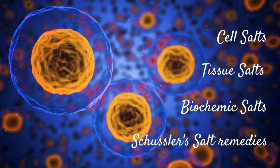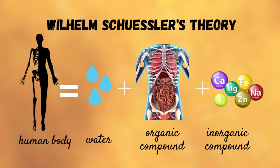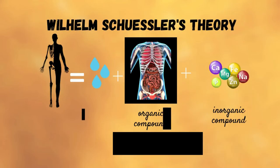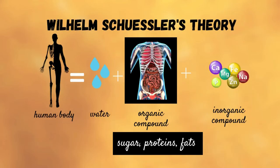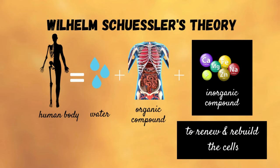This is named after the doctor who developed them. In the 1800s, Schuessler theorized that the human body is made up of water, organic compounds, and inorganic compounds. Organic compounds make up the bulk of the physical body, and this includes sugars, proteins, and fats.